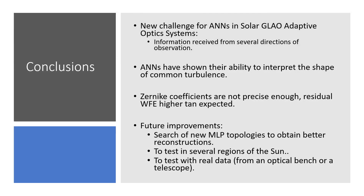The work presented consists of the first results of applying neural networks as a reconstructor for a solar GLAO adaptive optic system. It was a new challenge for artificial neural networks, as they had to merge information obtained from sensors oriented in different directions into a common turbulence estimate. Throughout the results presented, artificial neural networks have shown they are able to obtain the type of common turbulence from the sensors, correctly identifying areas with higher phase variation. However, at the moment, the Zernike coefficient estimates are not precise enough, as the intensity of the turbulent phases does not correspond to the simulated one, leading to higher residual wavefront error values than expected.